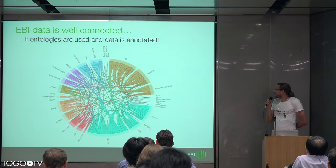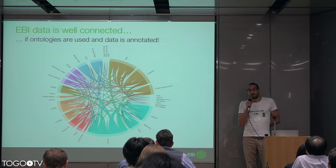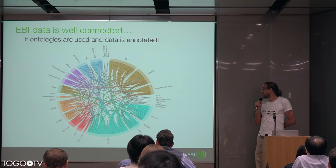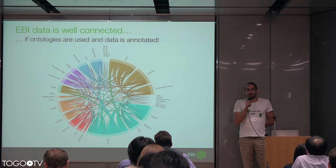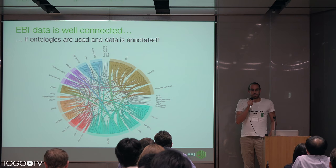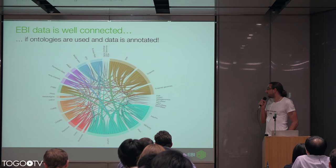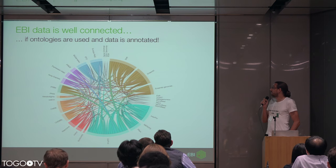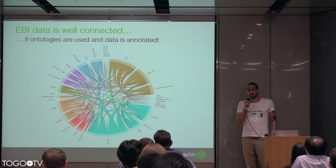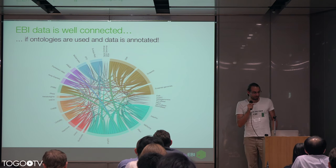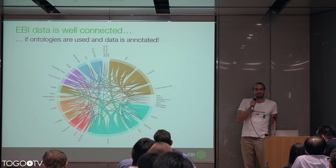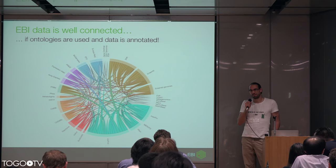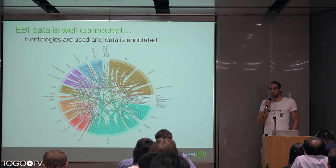The EBI has a lot of data and the data is well connected. This graph represents a couple of well-known databases at EBI, for example ChEMBL, Ensembl and others. We can see we have many, many connections between these data sources. And if we use ontologies and the data is annotated with ontologies, we can explore these connections. However, this diagram is more like a schema — it's created by hand with estimated values and is not really computed across all these resources.